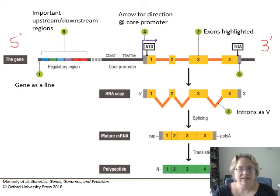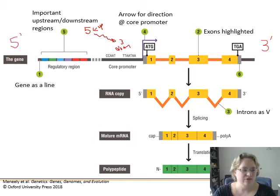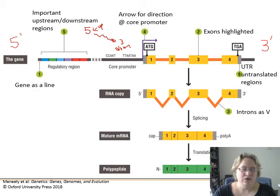We'll also highlight upstream and downstream regions. One way to remember which is which: five is higher than three, so the stream flows down from 5' to 3'. Upstream is near the 5' region, and downstream is by the 3' region. Finally, we have untranslated regions — UTRs — both before and after the coding sequence, shown in gray. These are bits that don't get put into the final protein.